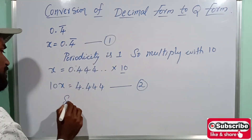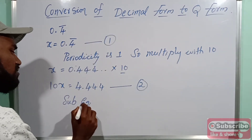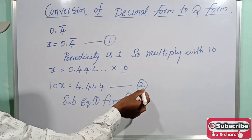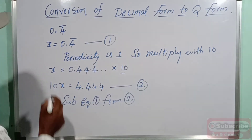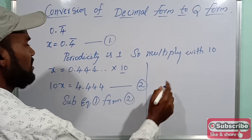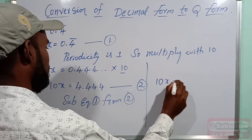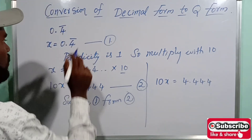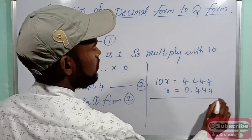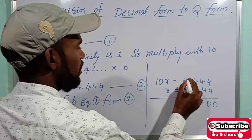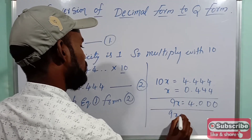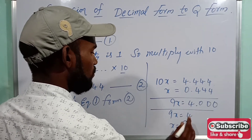Subtracting equation 1 from equation 2: equation 2 is 10x equals 4.4444, and equation 1 is x equals 0.4444. Subtracting: 4 minus 4 is 0, and 10x minus x is 9x. So 9x equals 4, therefore x equals 4 by 9.